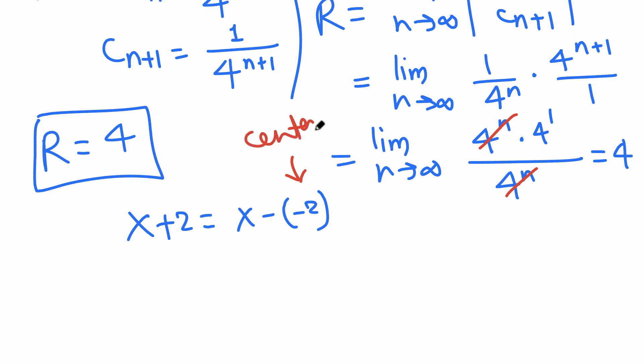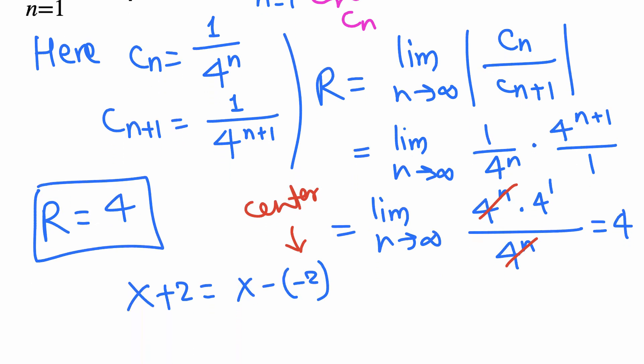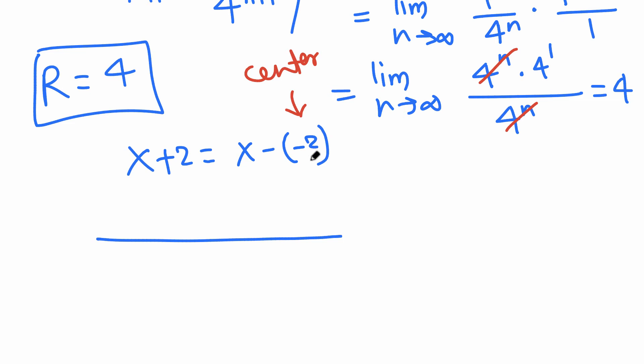That means we have this real number line with -2 somewhere. The radius is 4, so we need to go 4 units to the right: -1, 0, 1, 2. So it will be up to 2.